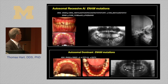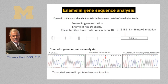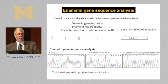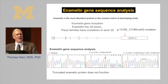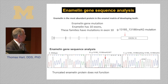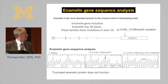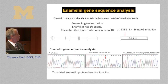For enamelin mutations, depending on the type of mutation, they can cause either autosomal recessive AI or autosomal dominant AI. So just knowing the gene doesn't tell you how the disease will manifest. Enamelin is the most abundant protein in the enamel matrix of developing teeth. This is a case from families in Turkey with AI — we did linkage analysis, localized the gene to chromosome 4, did mutation analysis, and identified the same gene mutation in probands from different, unrelated families. A two base-pair insertion causes a frame shift, a premature stop codon, and a truncated non-functional protein.